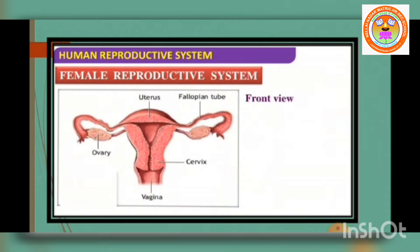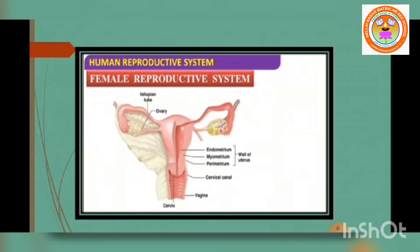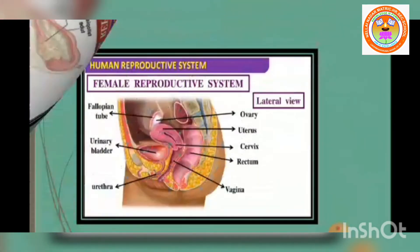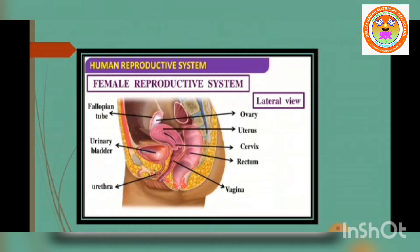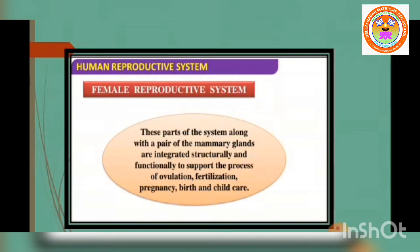The female reproductive system is far more complex than the male because in addition to gamete formation, it has to nurture the developing fetus. The female reproductive system consists of a pair of ovaries along with a pair of oviducts, uterus, cervix and vagina, and the external genitalia located in the pelvic region. These parts, along with the mammary glands, are integrated structurally and functionally to support the process of ovulation, fertilization, pregnancy, childbirth and child care.